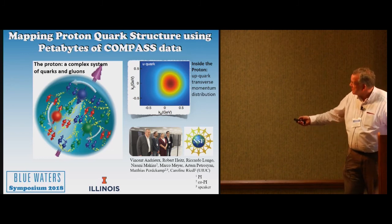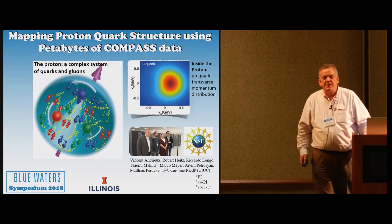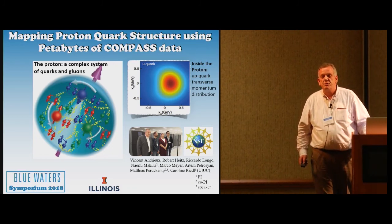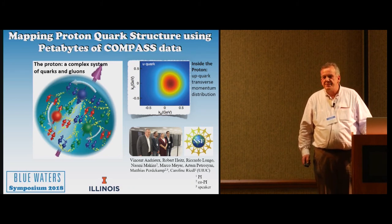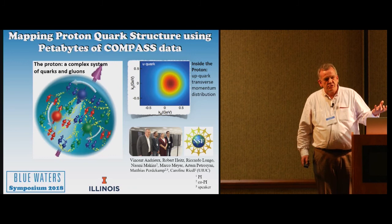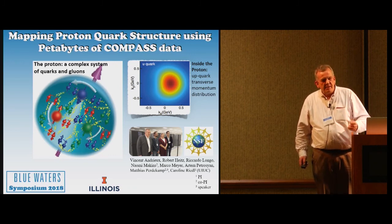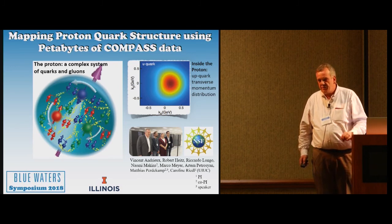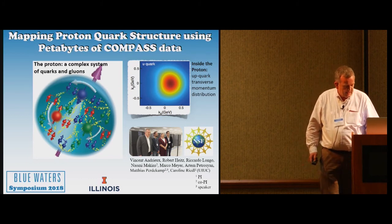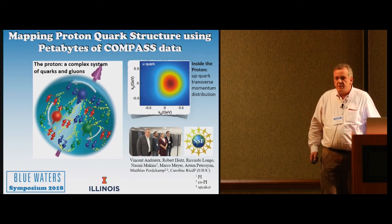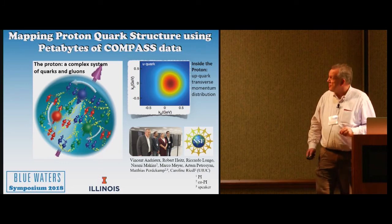The proton is a complex object. Some of you might know that initially we thought there are three valence quarks, two up quarks and a down quark, but nothing could be further from the truth. There are strongly interacting force fields in the nucleon and therefore dozens of virtual quark-antiquark pairs that constantly are created and annihilate again, which are very important to understand the properties of the proton.